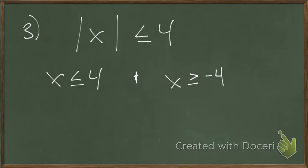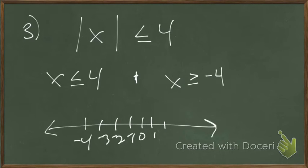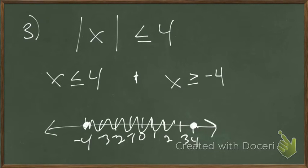Here's what's cool — on a number line: negative 3, negative 2, negative 1, 0, 1, 2, 3, 4. If it has to be less than or equal to 4, I'm solid there. And it has to be greater than or equal to negative 4 — solid there as well.